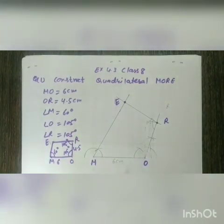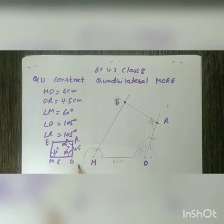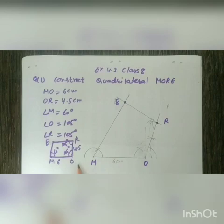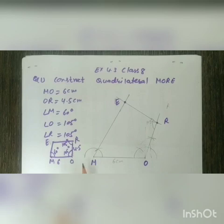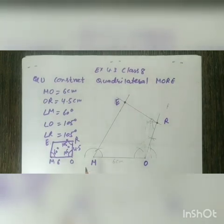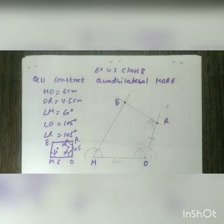This is how you construct a quadrilateral when angles are given. Remember: always construct angles with the compass when the angle is a standard value — 45°, 60°, 90°, 75°, 105°, 120°, or 135°. If the angle is something like 80° or 70°, then use the protractor. Thank you so much.